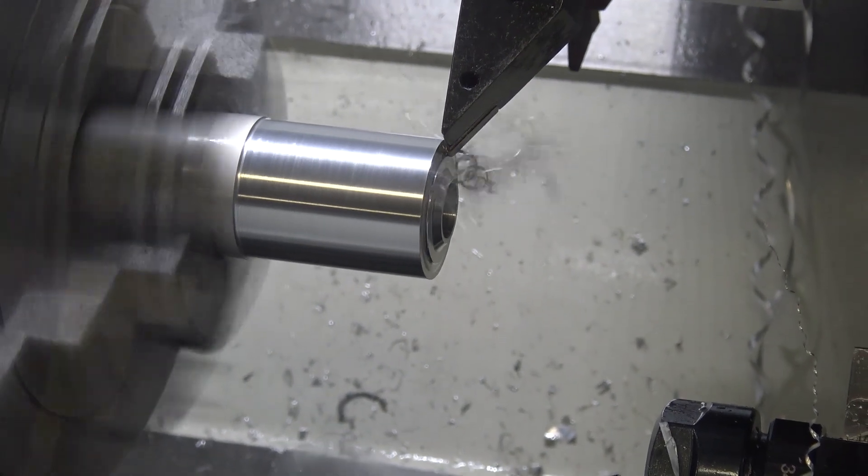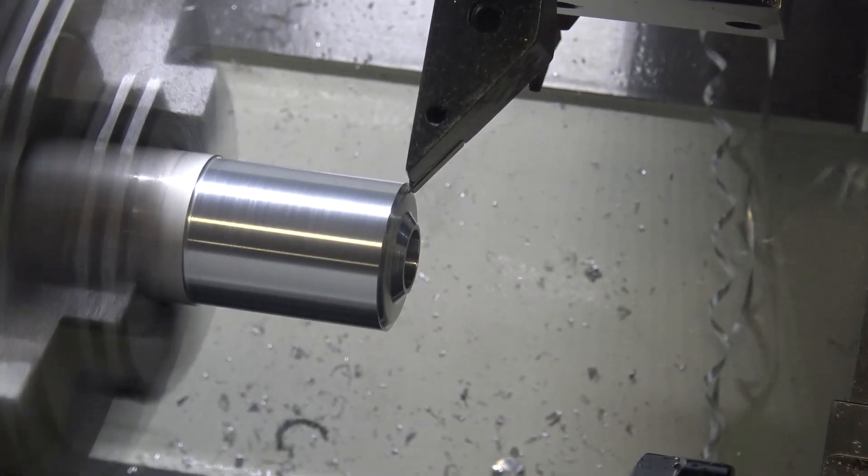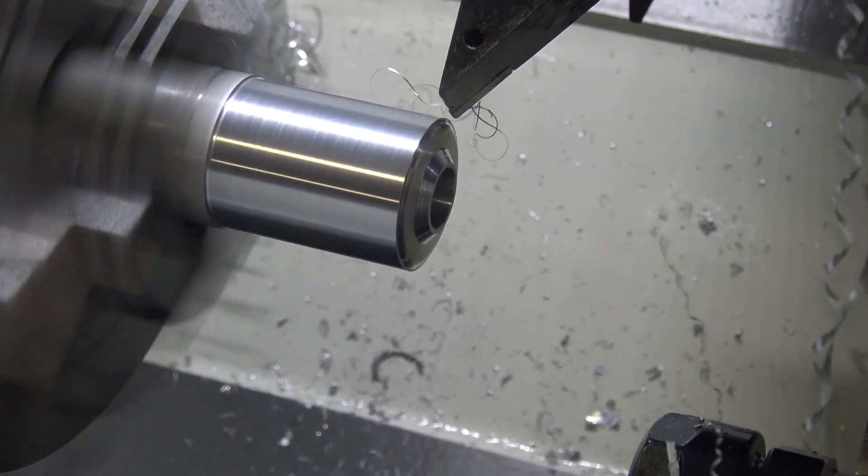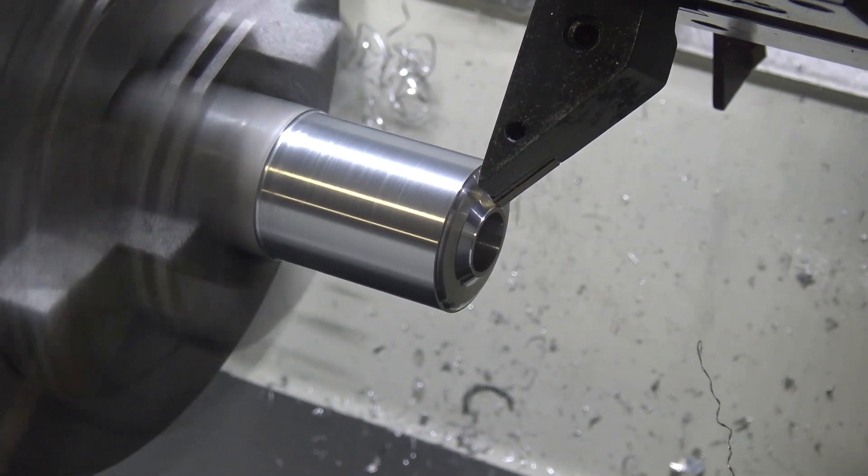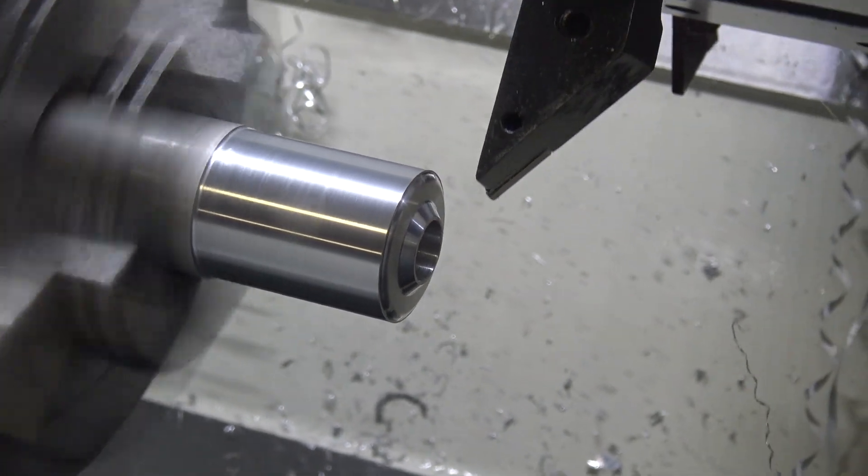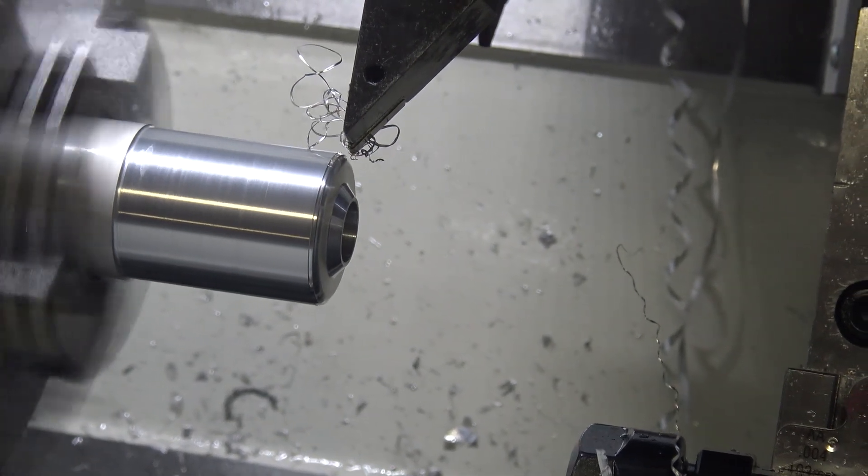We're going to probably do the finishing pass here in a second and get a nice clean up. I think it's right here. It leaves a real nice surface finish. Next, we're going to be doing the side profile. Again, it leaves a really nice surface finish. I'm not using coolant, and these inserts aren't even really made for aluminum.